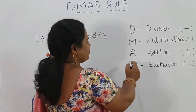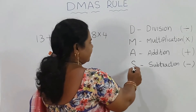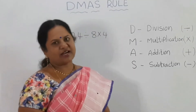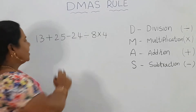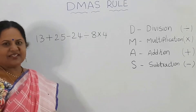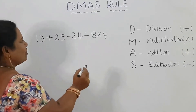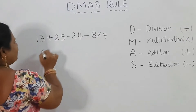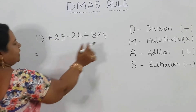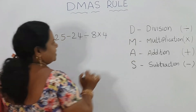Then multiplication, then addition, then subtraction. Now we have to solve this problem. First, I will do division. The division symbol — divide by. So 24 divided by 8.